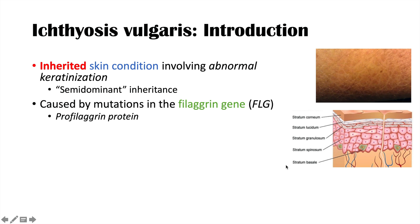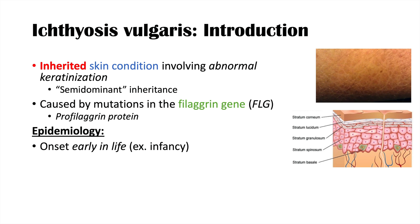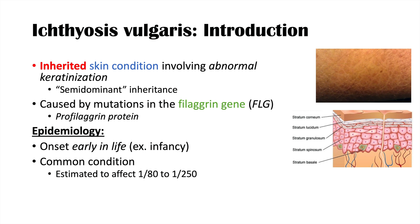The other layers — stratum spinosum and stratum basale — are present. The epidemiology of ichthyosis vulgaris involves an early onset, generally starting in infancy or early childhood. It's a relatively common condition, with estimates ranging from one in 80 to one in 250 people, meaning over 1% of the general population may be affected. It is also associated with atopic dermatitis or eczema, and we'll find they share similarities but also have important differences.